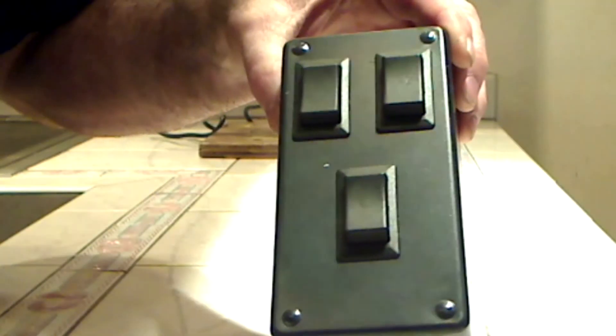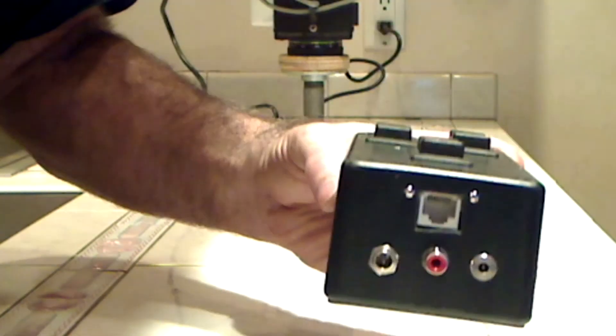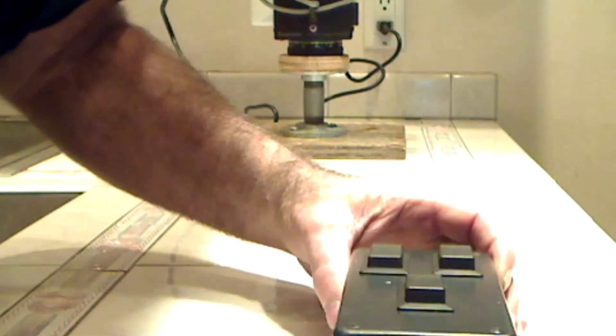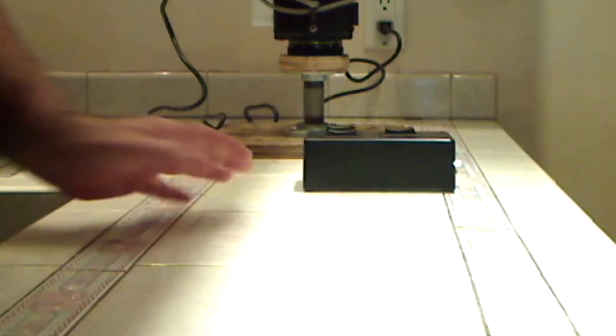The 12 volt powers, come on, you guys know it, powers the pan and tilt. The 5 volt power powers the lens. So three switches, pan, tilt, and zoom.